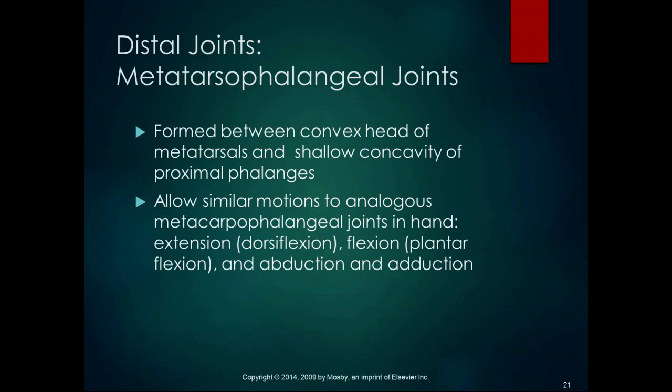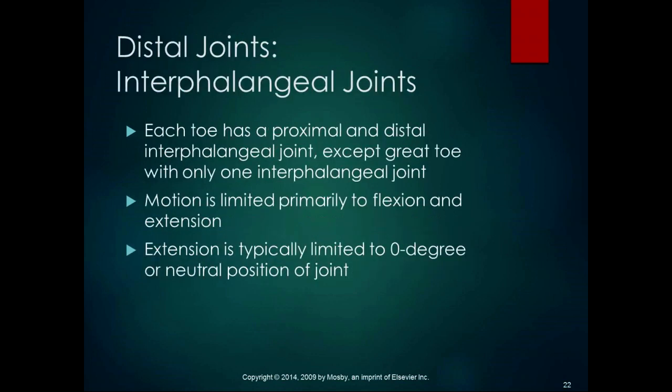The interphalangeal joints are the most distal joints in the foot. Each toe has a proximal and distal interphalangeal joint, except the big toe which only has one. Motion is limited primarily to flexion and extension, with extension typically limited to neutral. Even though these joints don't have much motion, working on joint mobility for all individual toes is important for normal walking, and clinical techniques like Graston can be effective for conditions such as hammer toe.